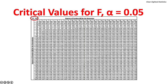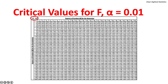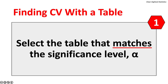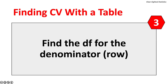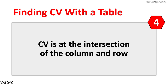Here is the critical value table for F at a 5% significance level, and one at a 1% significance level. Always double-check that you are using the table corresponding to the selected significance level. To use the tables: select the table matching the significance level; find the degrees of freedom for the numerator (column labels) and denominator (row labels); the critical value for F is at the intersection of the appropriate column and row.